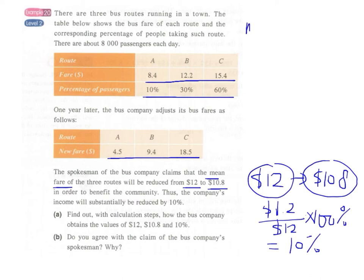Following the wording of the problem, we find the old mean of the data: 8.4 plus 12.2 plus 15.4, divided by 3. Using our calculator, this equals $12. So this is the old mean.